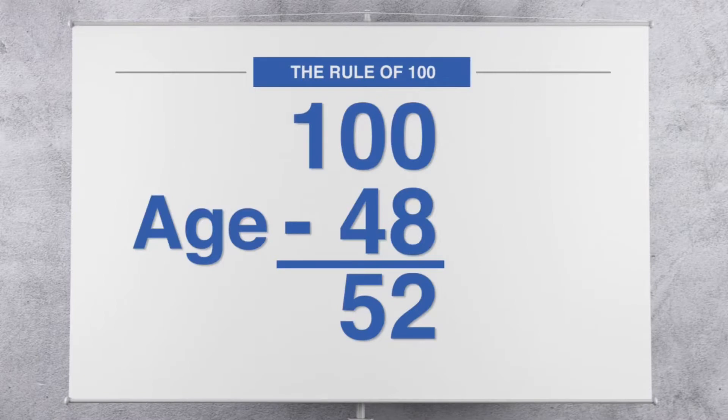The portion that represents your age — the 48 — is the percentage of your assets that you may want to allocate to those financial vehicles generally considered more secure. This is the area that sometimes trips people up with regards to the Rule of 100. The concept of balancing your assets between risk and more secure financial products is pretty simple.